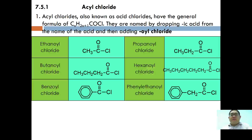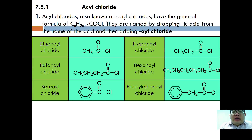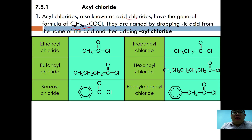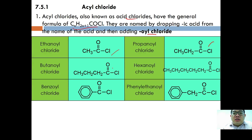We are going to continue with the fourth video on carboxylic acid derivative chemistry, starting with acyl chloride. Acyl chloride is also known as acid chloride, with the general formula CnH2n+1COCl. They are named by dropping the -ic acid from the carboxylic acid and adding -oyl chloride. So with 2C we have ethanoyl chloride, 3C propanoyl chloride, 4C butanoyl chloride, 6C hexanoyl chloride.